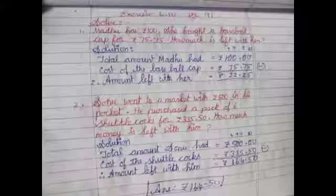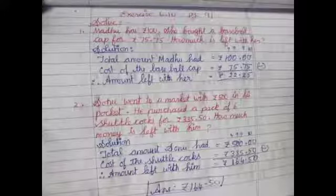Exercise 6.10, page number 91, we have word problems. First one is: mother had rupees 100. She bought a baseball cap for 75.75. How much is left with her? That's the question. The amount mother had is equal to 100 rupees. Cost of the baseball is equal to rupees 75.75. The amount left with her, we need to do the subtraction.